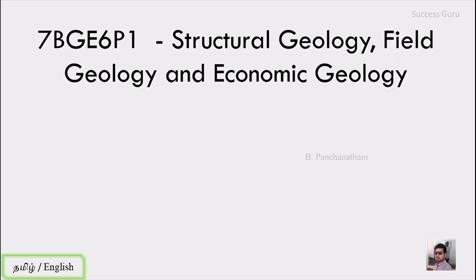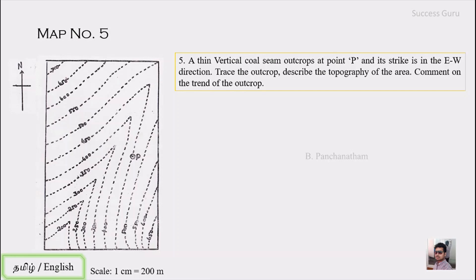Good morning students, welcome to practical lecture number three. Today we will cover map number five and six. The question for map five is: a thin vertical rock seam outcrops at point P and its strike is in the east-west direction. Trace the outcrop, describe the properties of the area, and comment on the trend of the outcrop.